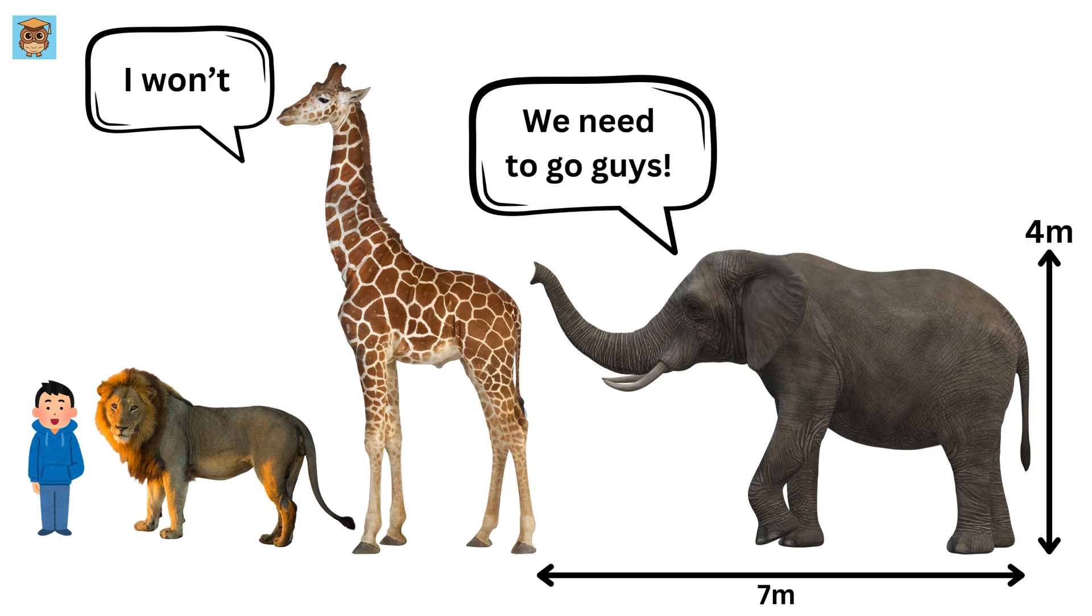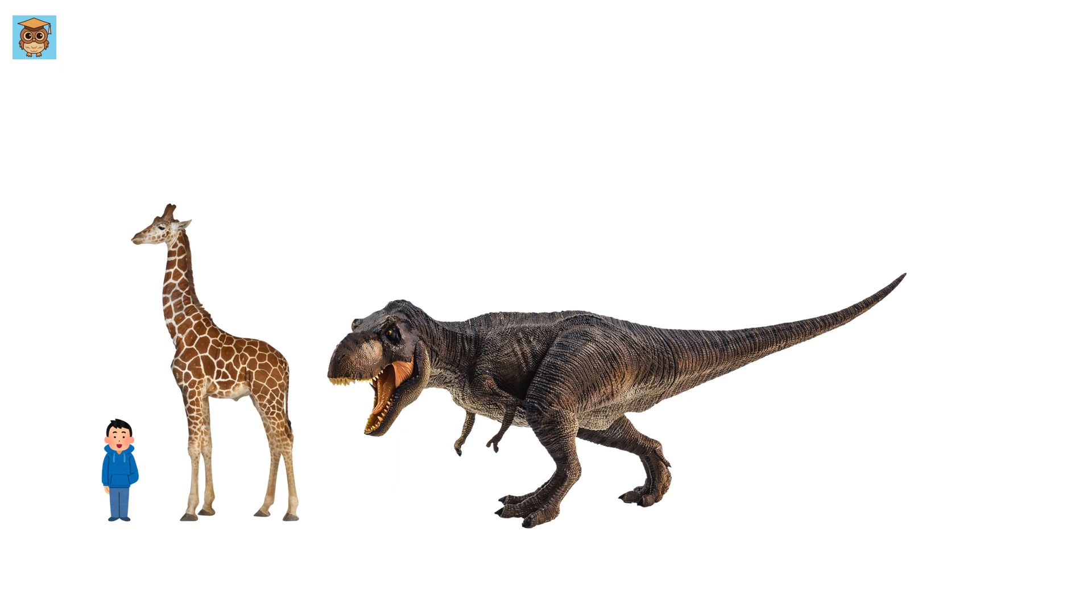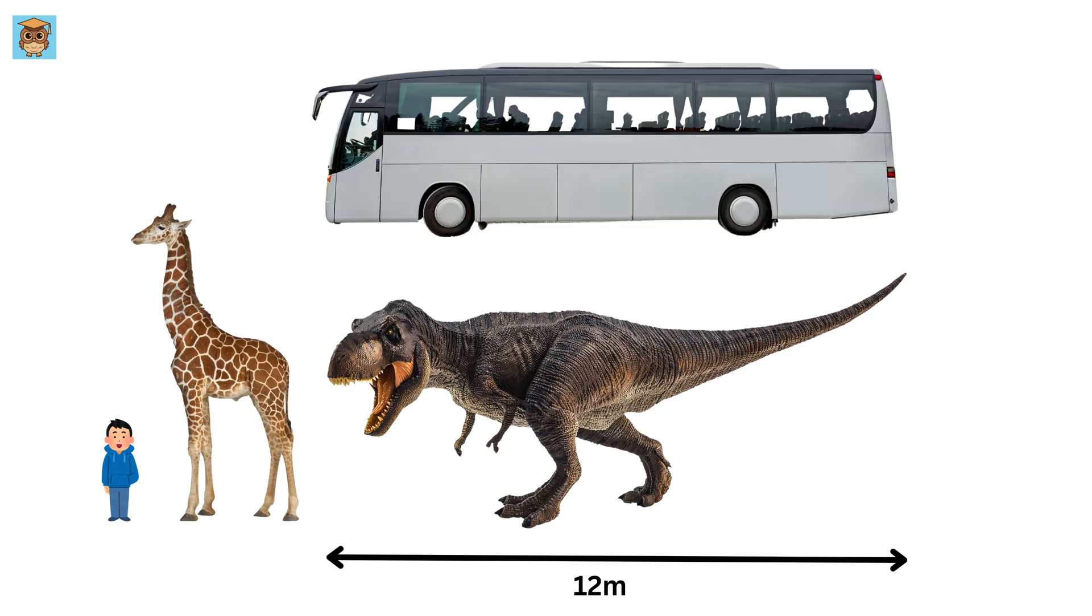Now, let's go way back in time. Dinosaurs. The Tyrannosaurus rex, one of the most fearsome creatures ever, was about 12 meters long, the size of a bus.